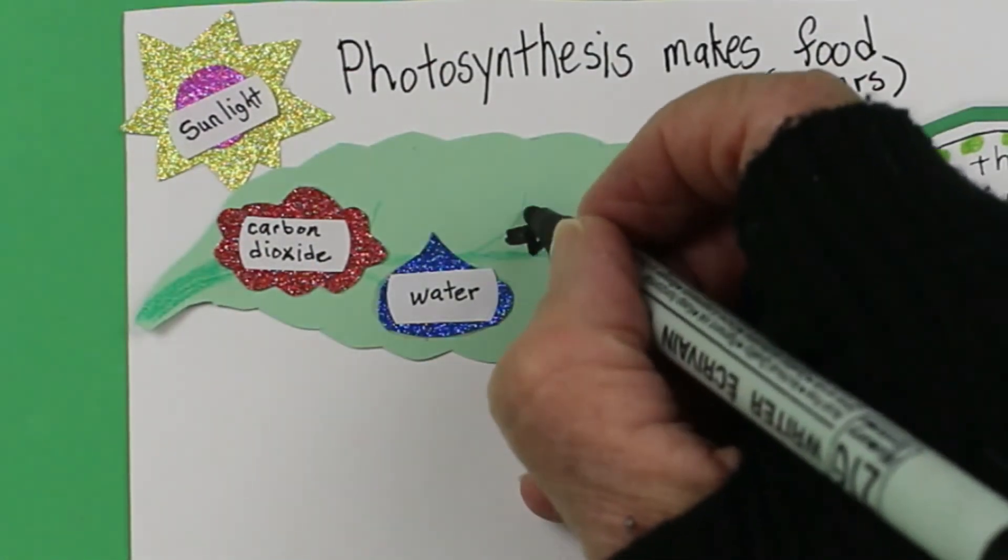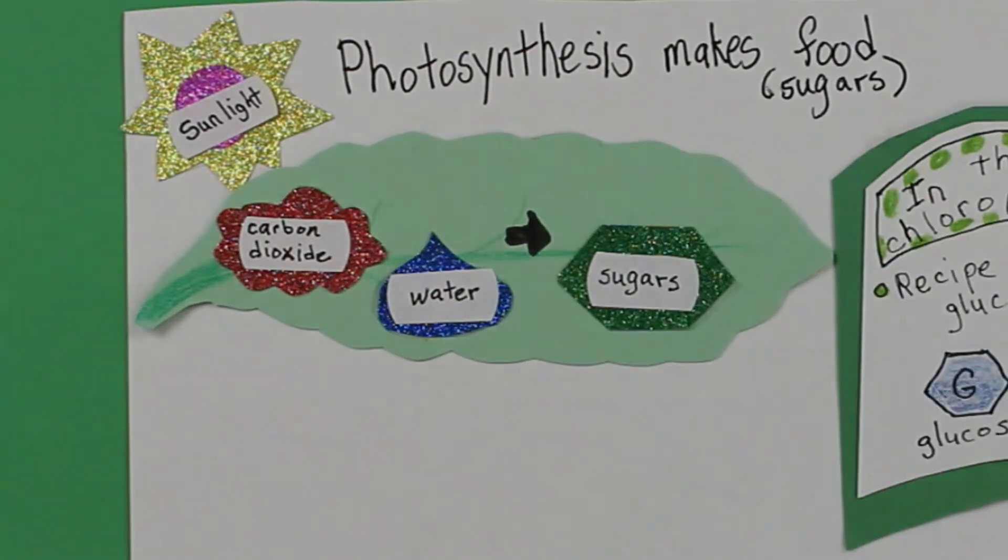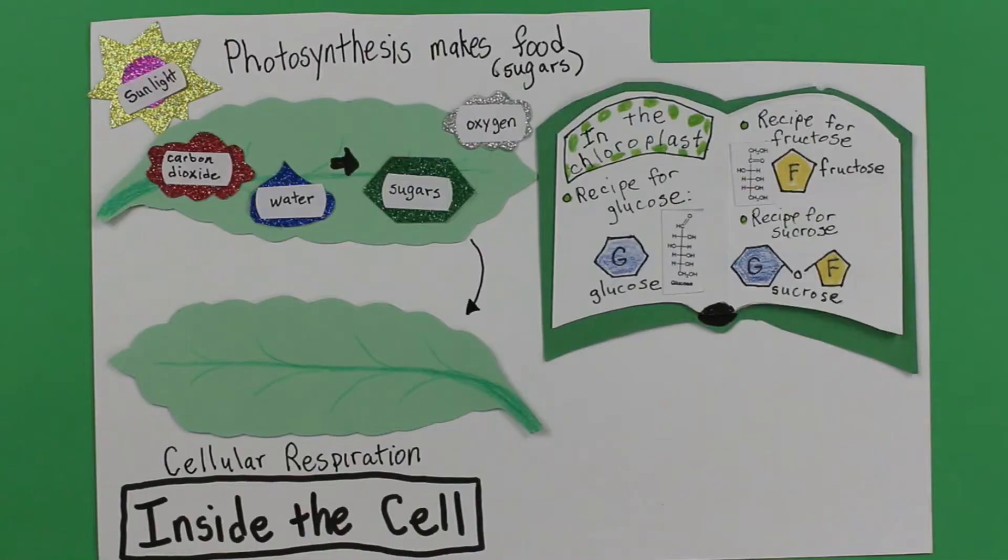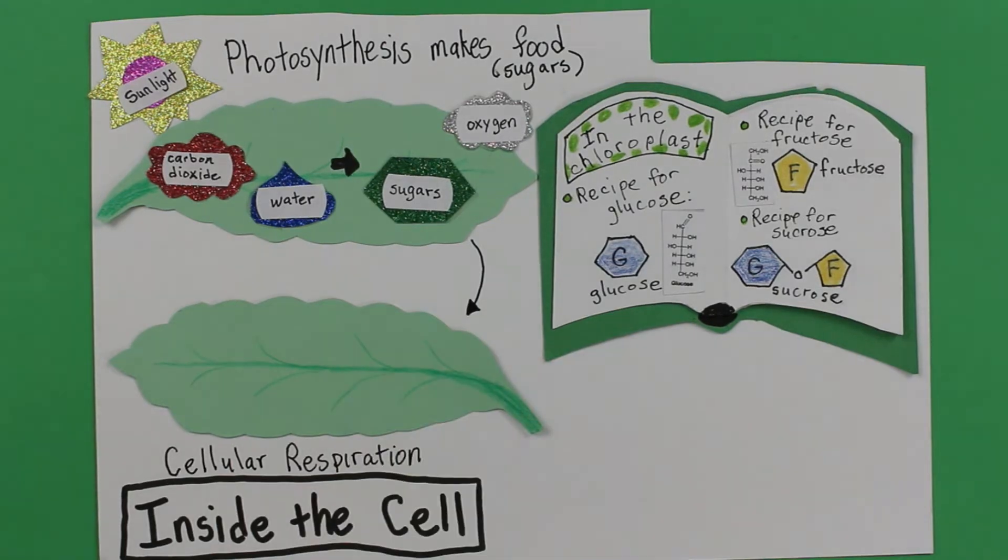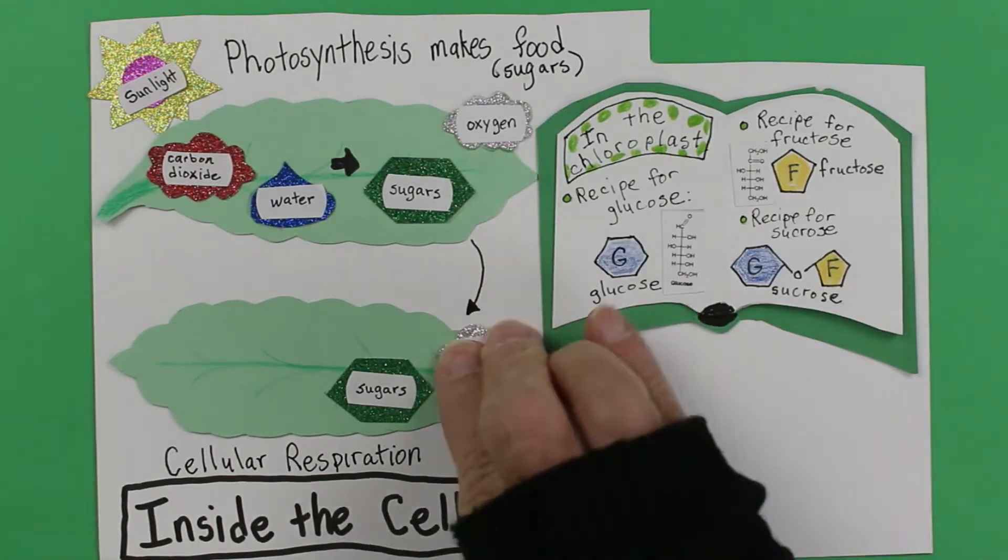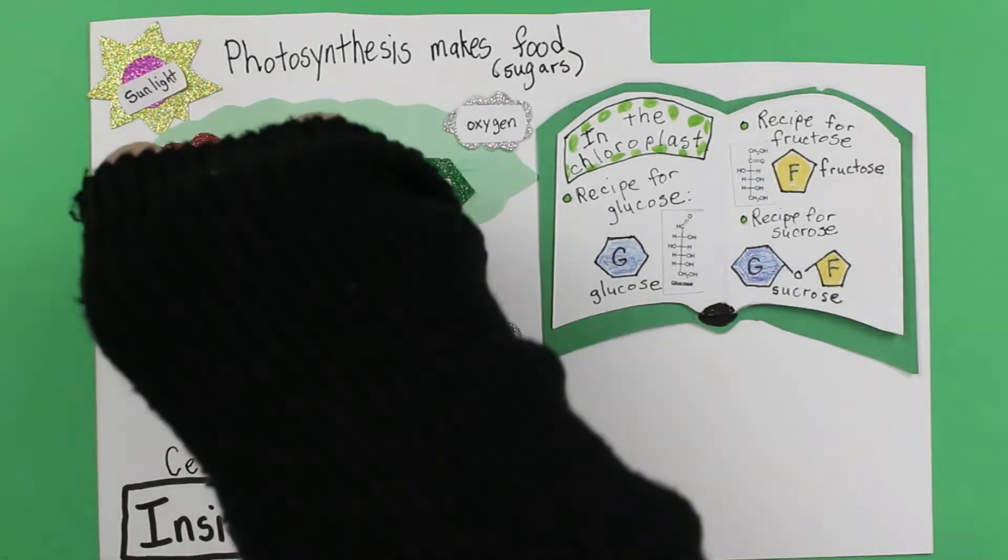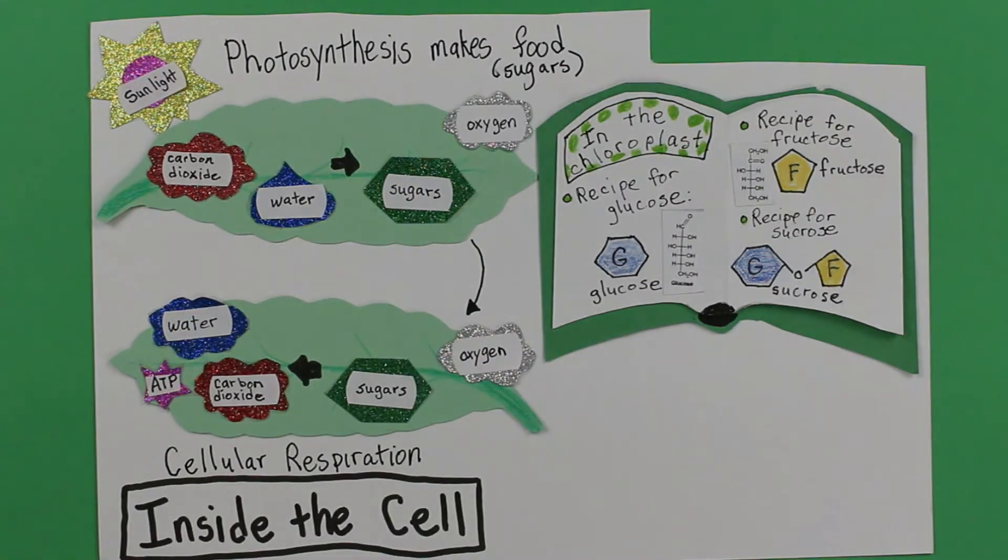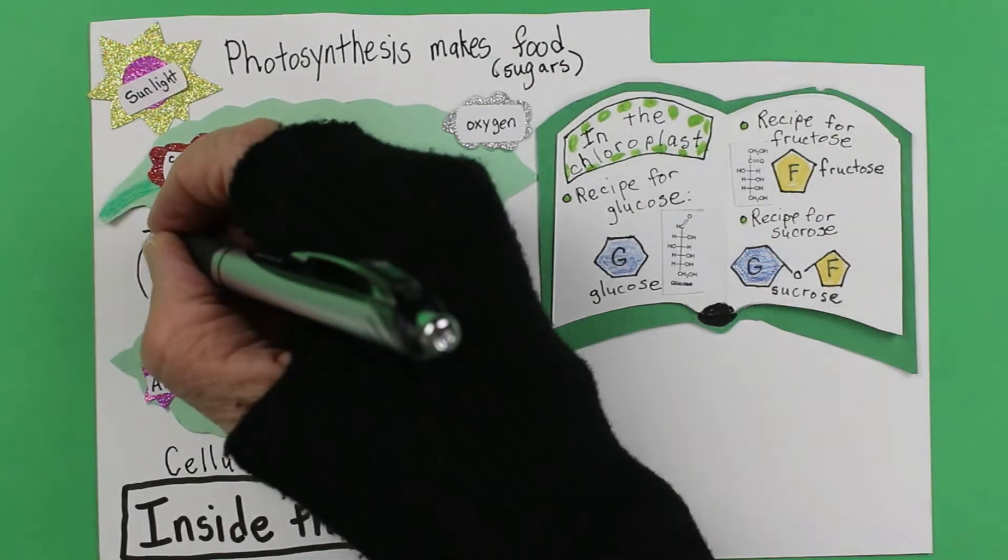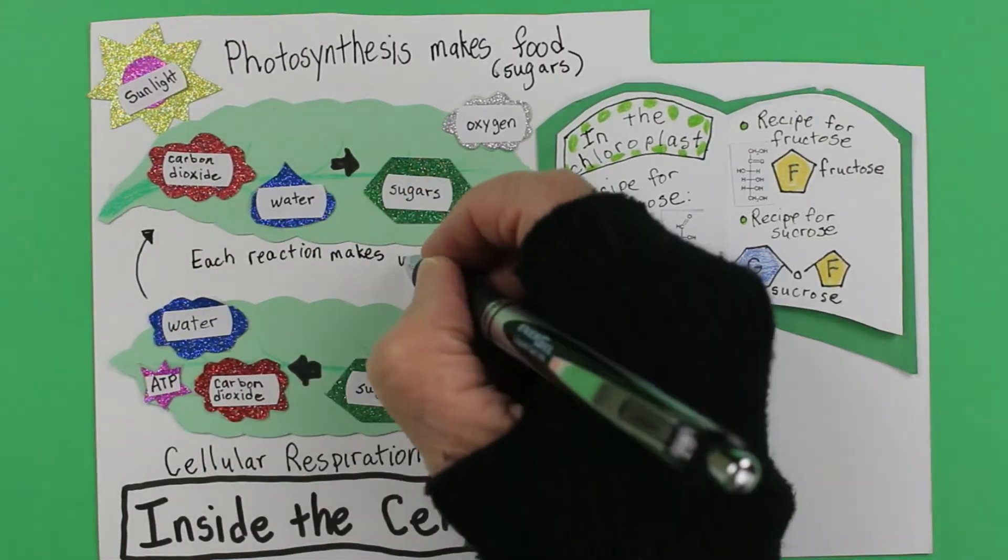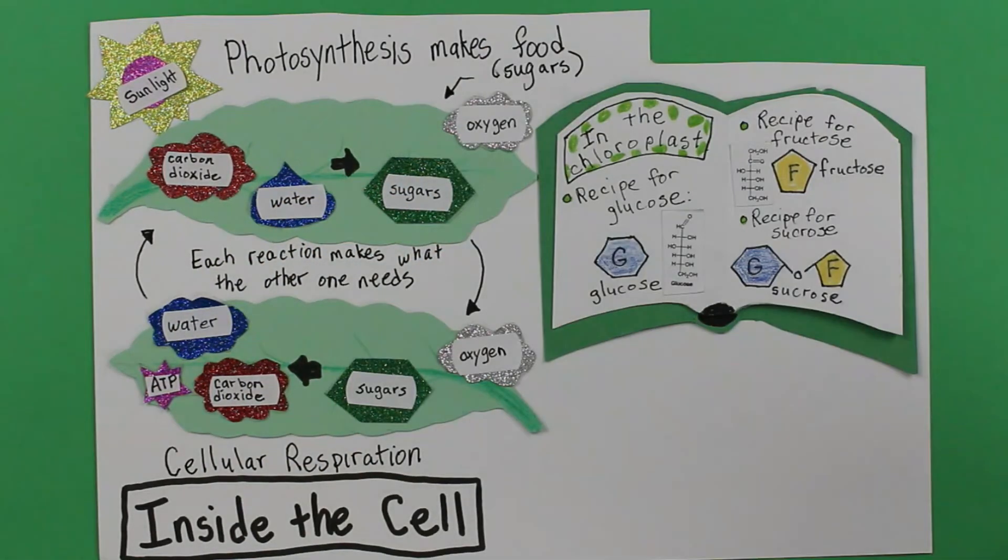One way the cell uses those sugars is to get energy. It's a neat little system where photosynthesis captures the sun's energy and puts it into the bonds that hold those sugars together. Then, cellular respiration, which we explored in episode two, uses oxygen to break apart those sugars, releasing the sun's energy and turning it into chemical energy the cell can use. In the process, it creates carbon dioxide and water. Don't be surprised that plants release some CO2 when they're breaking down food. I mean, they need energy too. But wait, there's more to this story.